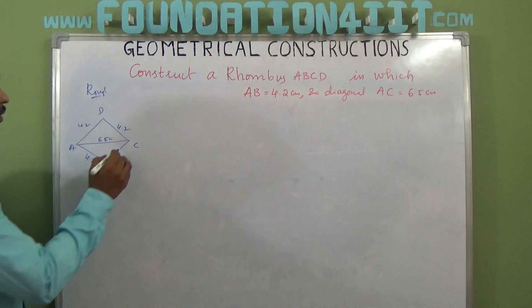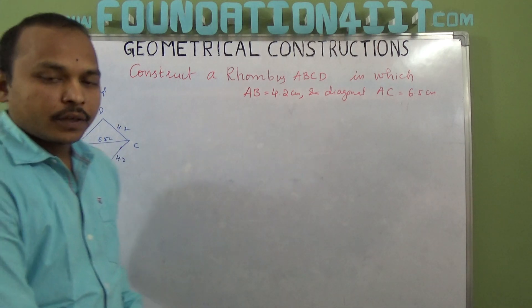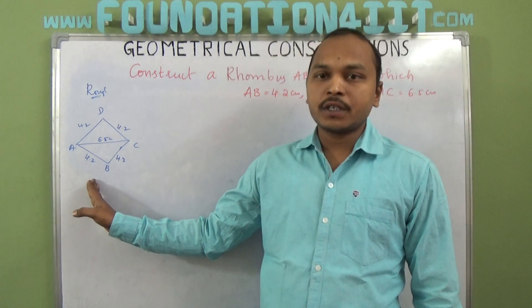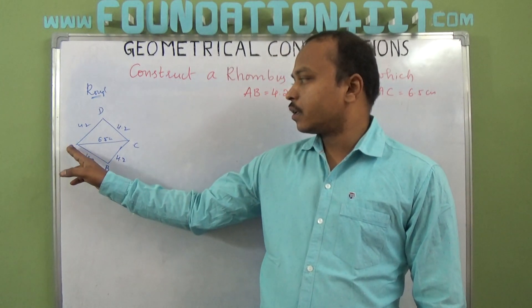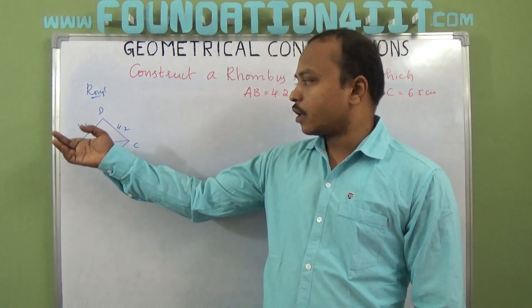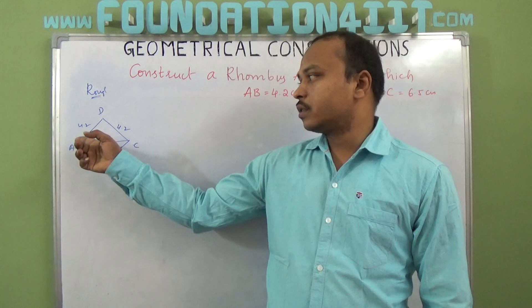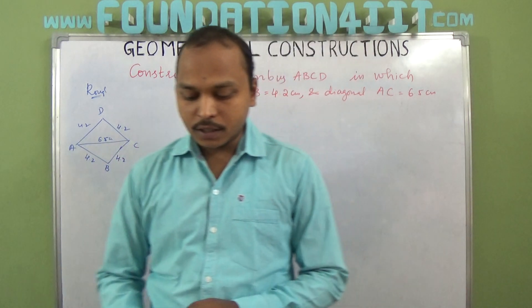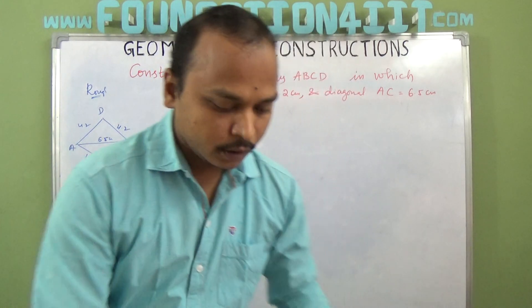Each and every side is the same distance, then we can construct easily. First, we will draw a base of 4.2 centimeters. From here, A to C is 6.5 and B to C is 4.2. Otherwise, we can draw a line directly: this diagonal is 6.5, this one is 4.2, this one is 4.2. You can construct easily now.